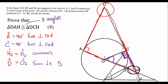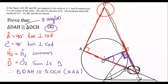So for that reason we can say triangle DAH is similar to triangle OCH, and our reason for that is angle-angle-angle. That's a nice 4-mark question.